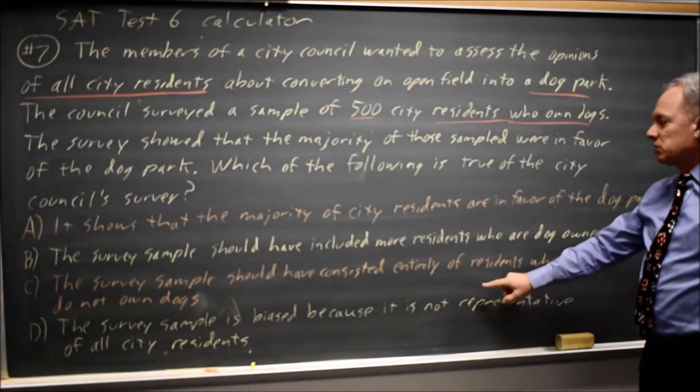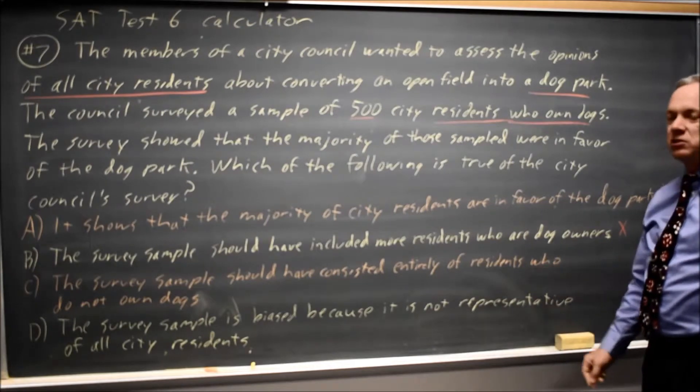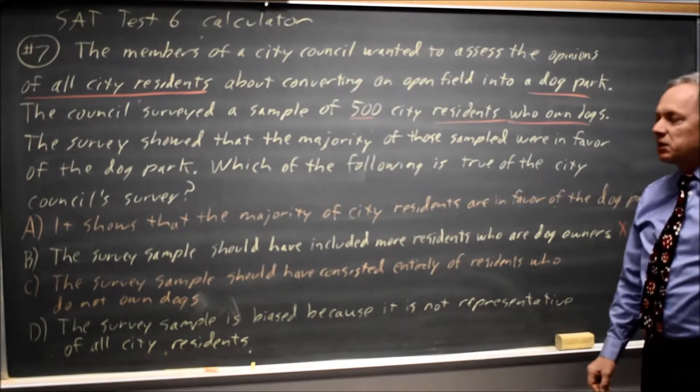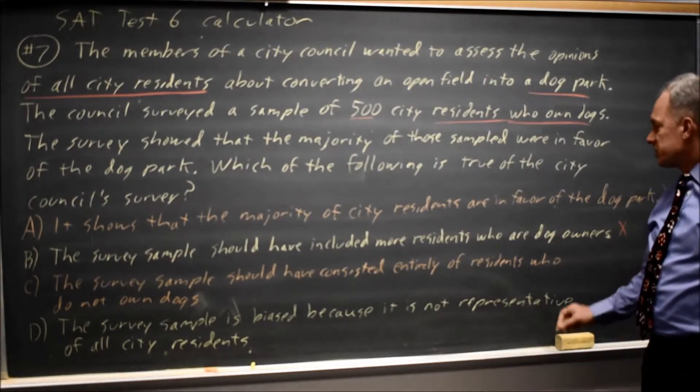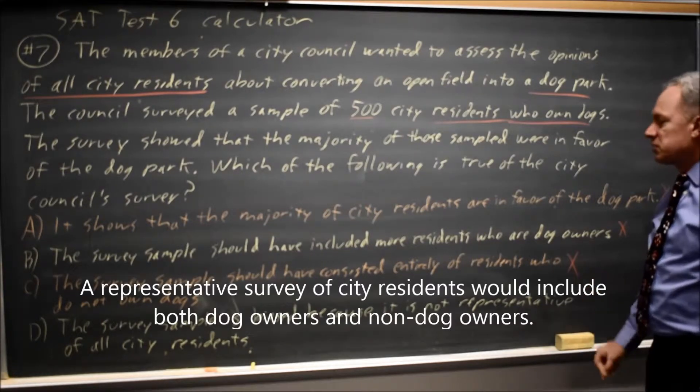Choice C: The survey sample should have consisted entirely of residents who do not own dogs. Again, residents who do not own dogs are no more representative than residents who do own dogs, so that choice is incorrect.